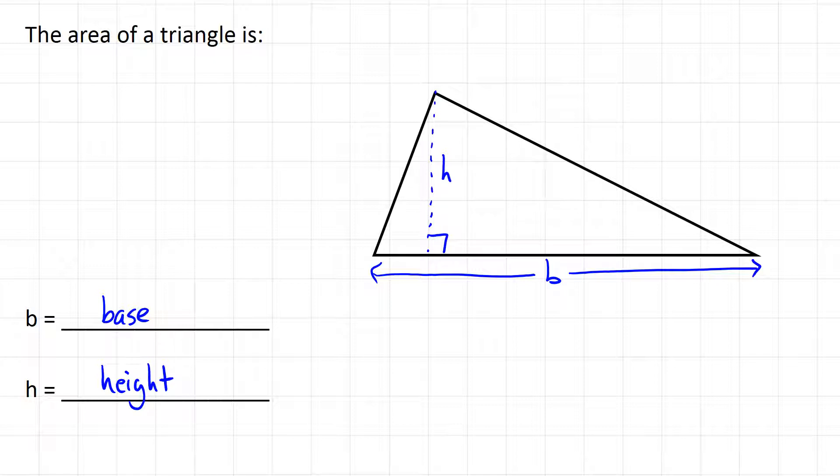To calculate the area, we take the base, multiply it by the height, and divide by two. A is equal to b times h divided by two.